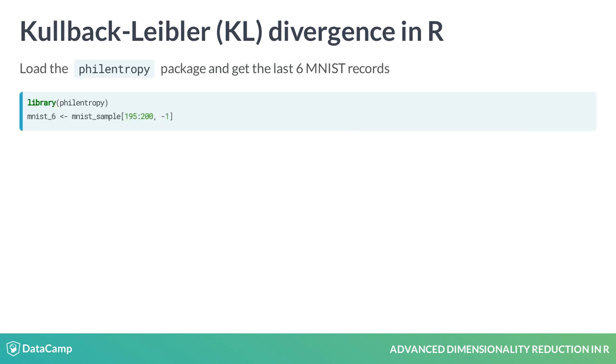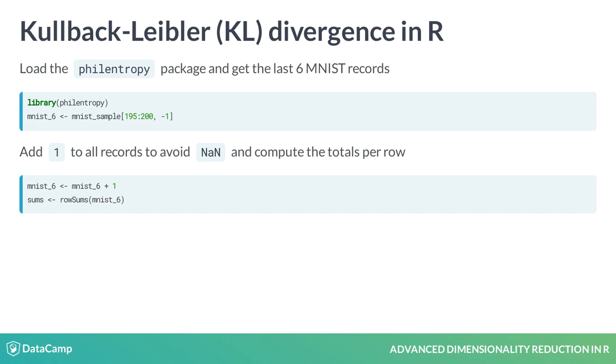First, we load the package and store the last six MNIST records from MNIST sample without getting the true label. To compute the KL divergence, all values need to sum up to one, so we are going to normalize the pixel values of each digit.